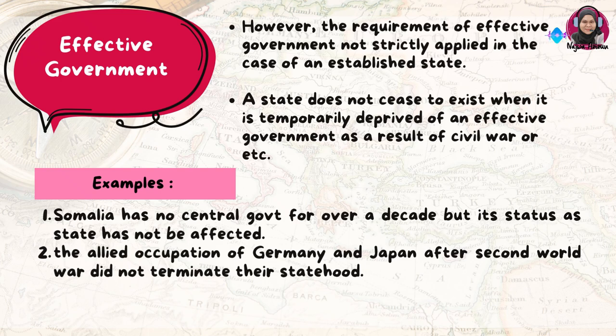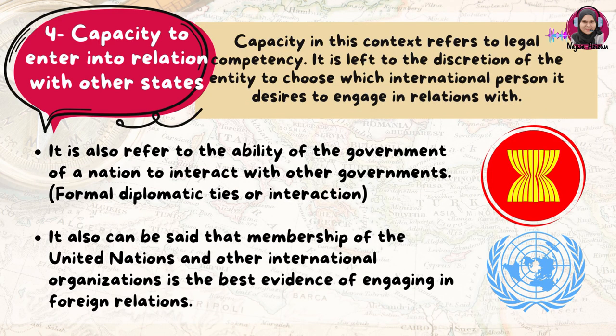However, the requirement of effective government does not strictly apply in the case of a newly established state. A state does not cease to exist when it is temporarily deprived of an effective government as a result of civil war. For example, Somalia had no central government for over a decade, but its status as a state has not been affected.